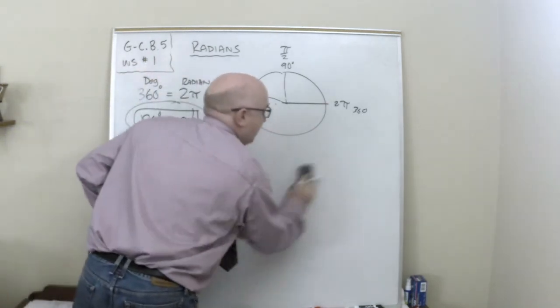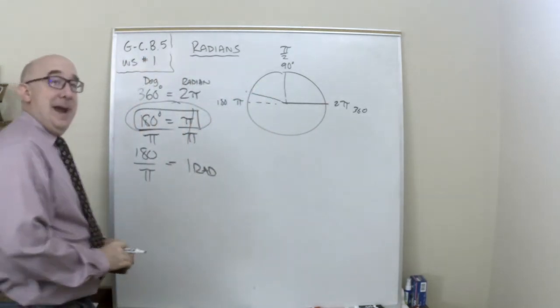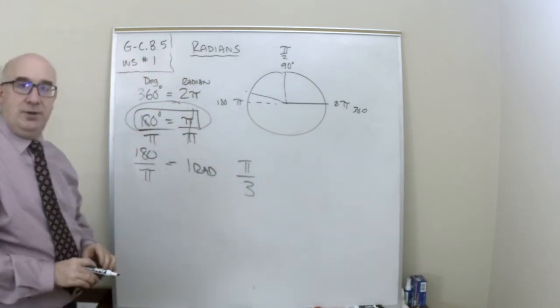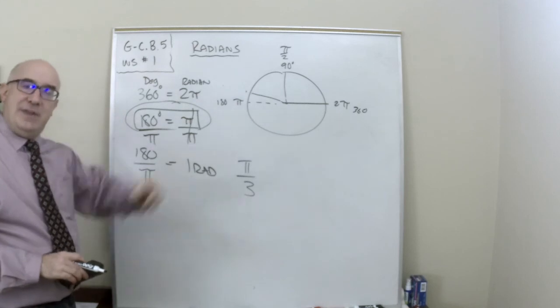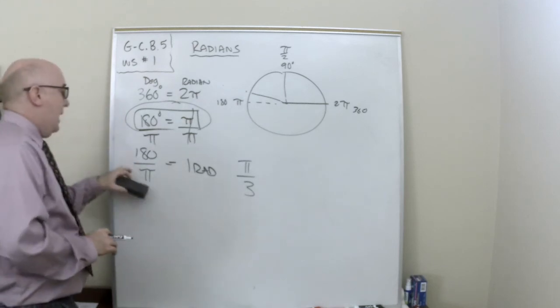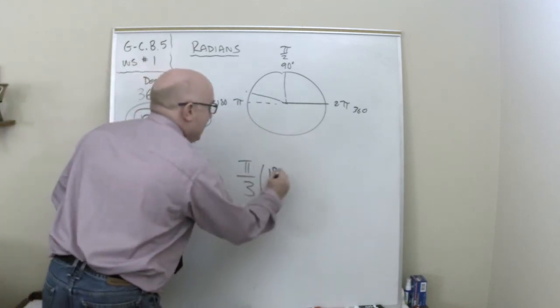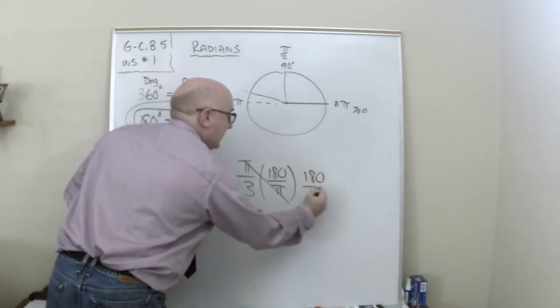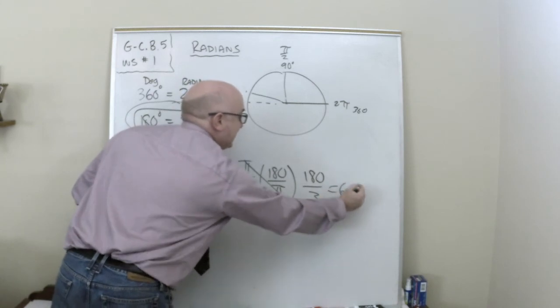So what that allows me to do is if I'm in radians, let's say I'm pi over 3. We know this answer, but let's say I'm pi over 3. And I want to find out what that is in degrees. I would multiply by 180 over pi. And I get a cancellation. I get 180 divided by 3 is 60.